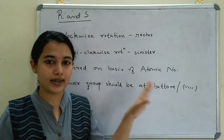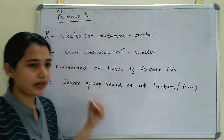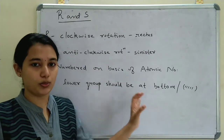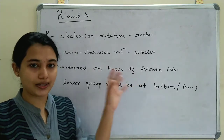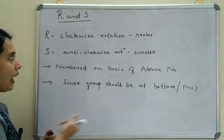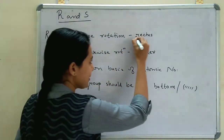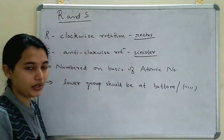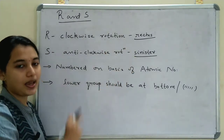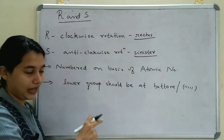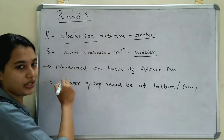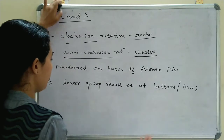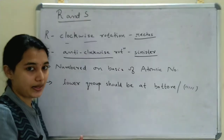R and S nomenclature applies only to chiral centers, also called chiral carbons. R stands for rectus and S stands for sinister — these are Latin words. R is for clockwise rotation and S is for anticlockwise rotation. We will see how clockwise and anticlockwise rotation is assigned.